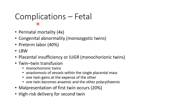Now let us see about the fetal complications of multiple pregnancy. Perinatal mortality is four times more common in multiple pregnancy when compared to singleton pregnancy. Congenital abnormality is more common especially in monozygotic twins. Preterm labor occurs in 40% of all multiple pregnancies. Low birth weight and placental insufficiency or intrauterine growth restriction are more common in monochorionic twins.